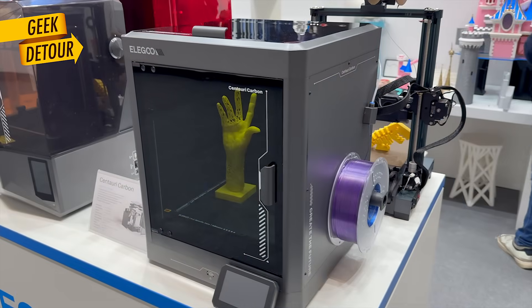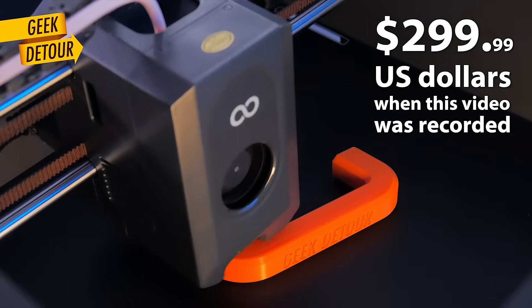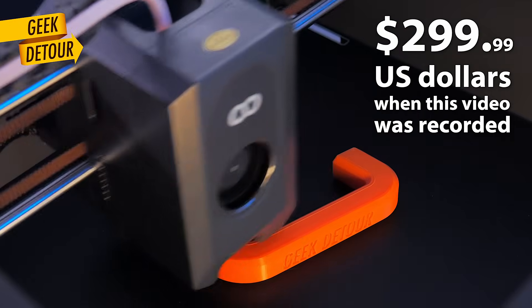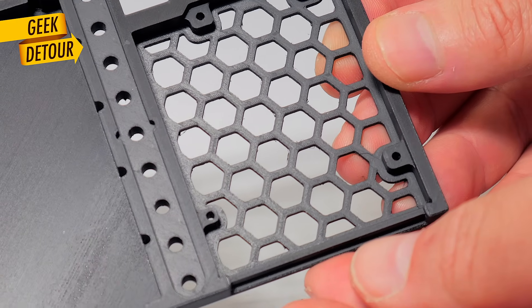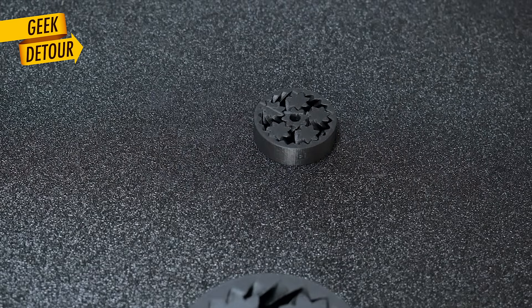I will print everything on the Elego Centauri Carbon, a new Core X-Y printer that anyone can buy. Thanks to Elego for sponsoring this video. On my last video, I fine-tuned my Centauri, but I left out a very important detail.